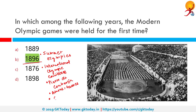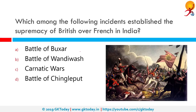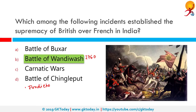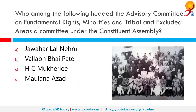Which among the following incidents established the supremacy of the British over the French? The correct answer is the Battle of Pondicherry, held in 1760, after which the French capital of Pondicherry fell to the British in 1761. Who among the following headed the advisory committee on fundamental rights, minorities, and tribal and excluded areas, which was a committee under the Constituent Assembly?